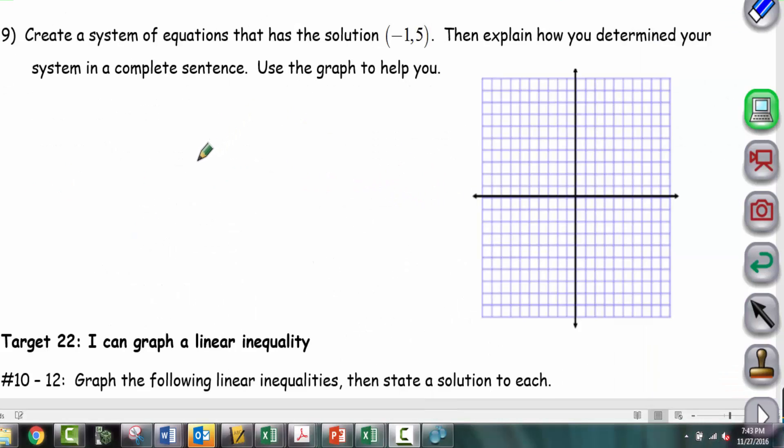Before we finish systems of equations, let's look at this last problem before target 22. Create a system of equations that has the solution (-1, 5). There are a couple of good ways to do this. The easiest is using the graph on the right.